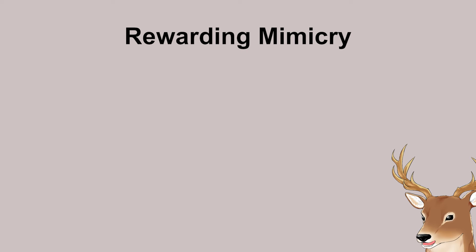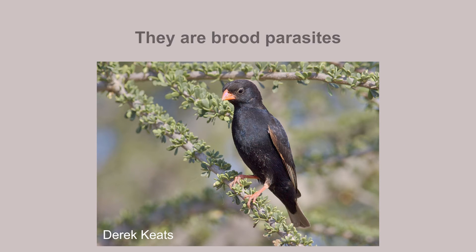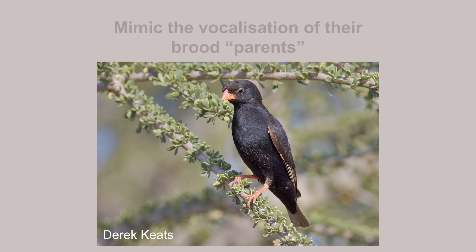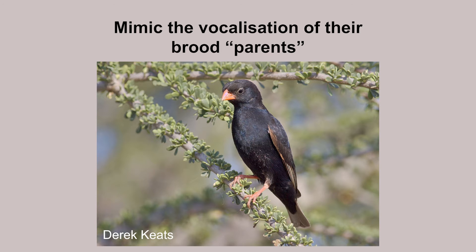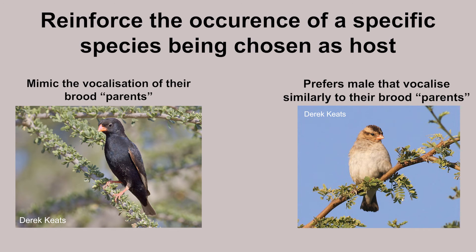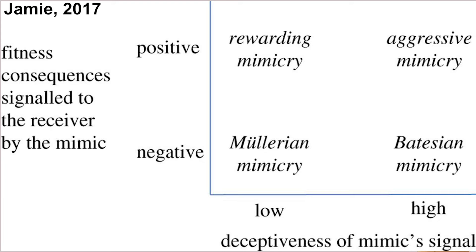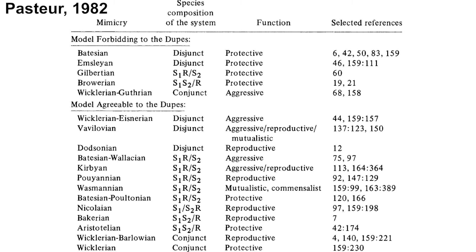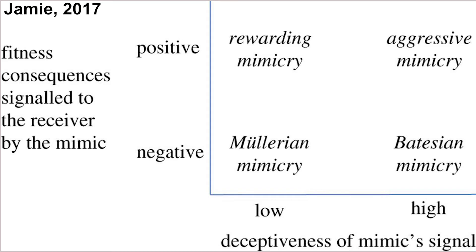Another form of mimicry with a fitness-benefit signal is rewarding mimicry, where the signal is non-deceptive. For example, the indigo birds or vidua — a brood parasite that lays eggs in other birds' nests. Male vidua mimic the vocalization of their brood parents, and female vidua prefer males that vocalize similarly to their brood parents, reinforcing the behavior of choosing a host from a certain species. The types of mimicry can thus be generalized into four types based on consequence to the receiver and deceptiveness of the signal. Many other types from older publications can be classified into these four.